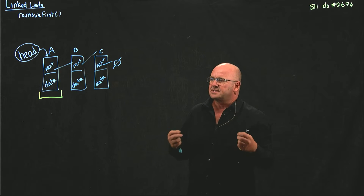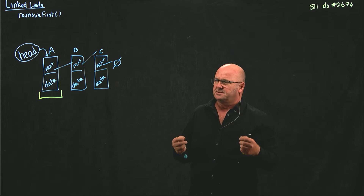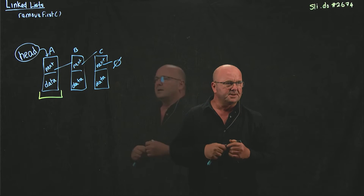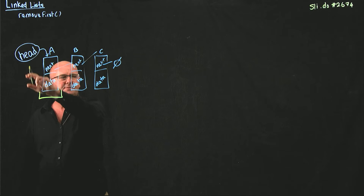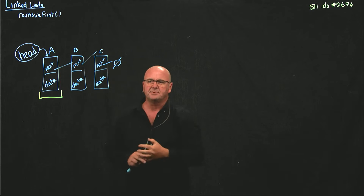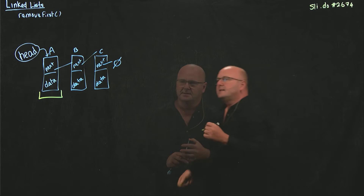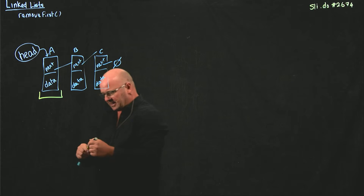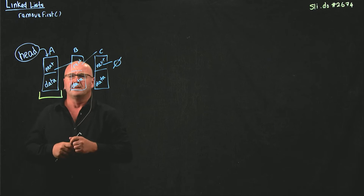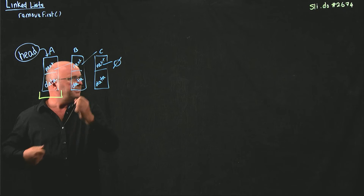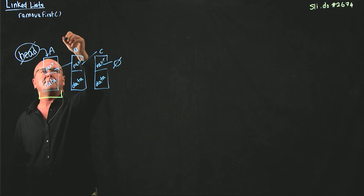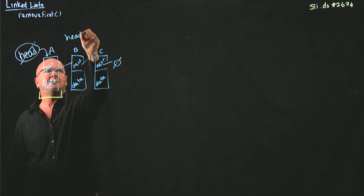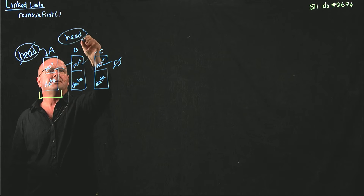So how are we going to delete that node — how are we going to remove it? Head is pointing to the node, so we need to move head to point somewhere else. Where is it going to point when we delete A? Head is going to point to B. So we want to get rid of the current head and make head now point to B.